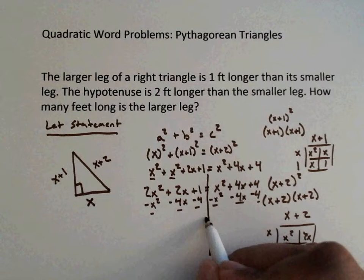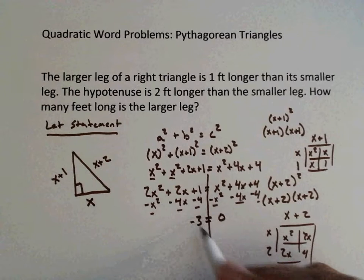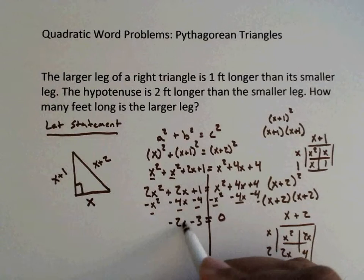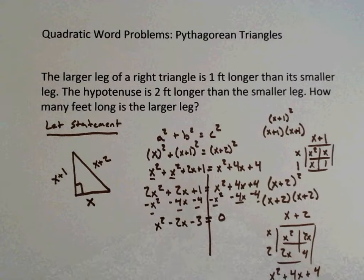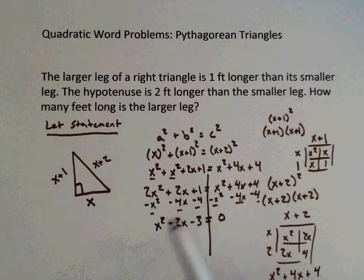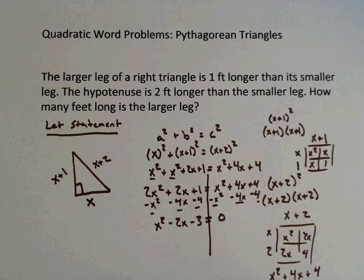1 minus 4 is negative 3. 2X minus 4X is negative 2X, and then 2X squared minus X squared is X squared. So now all we have to do is factor this. If we factor this, then we can set each factor up equal to 0, and then we can find out which one is a reasonable solution.